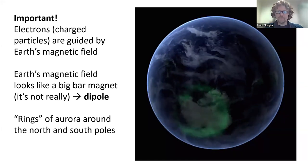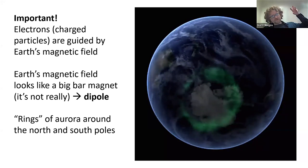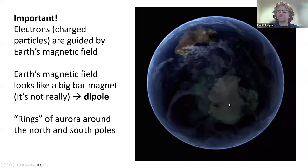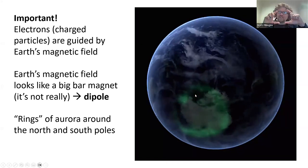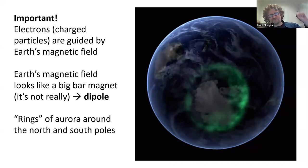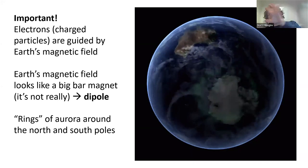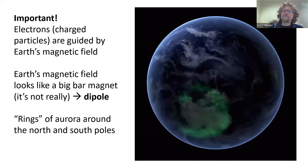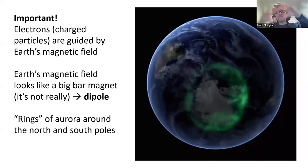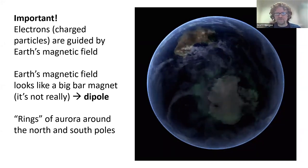From a satellite orbiting the Earth, looking down, you can see Antarctica — this is the southern lights. We have the northern lights right around the north and also the southern lights in the south. Again, this is over many hours, so it's greatly sped up. You can see how the aurora is kind of dancing and moving around, changing shape and brightness.